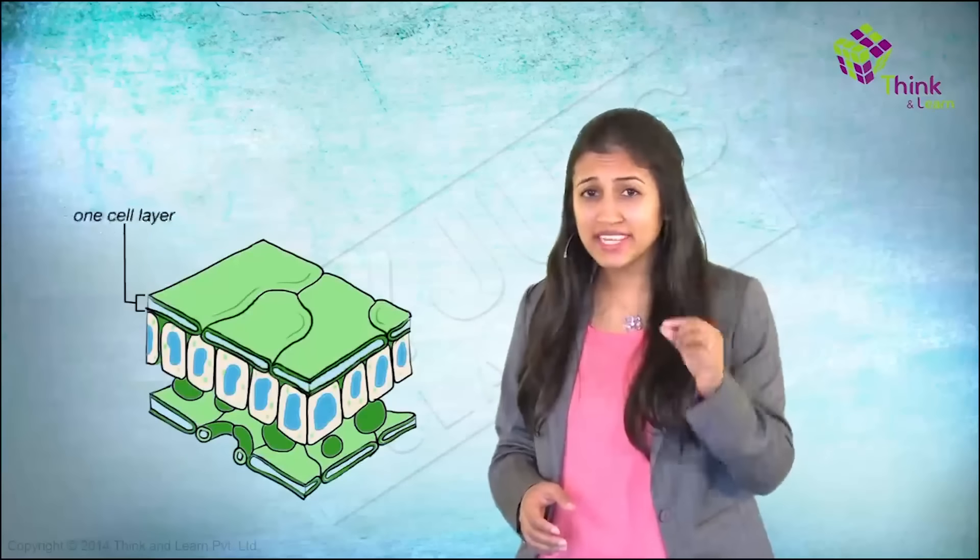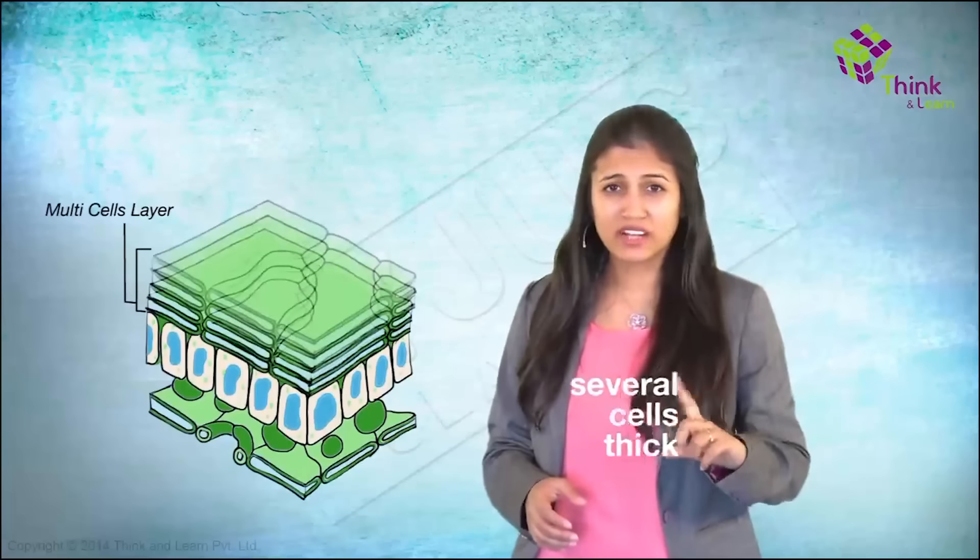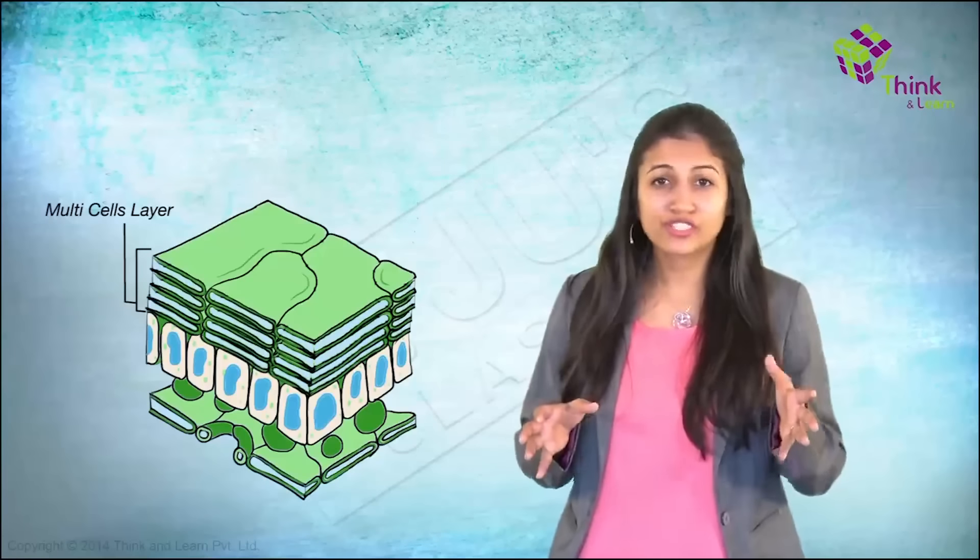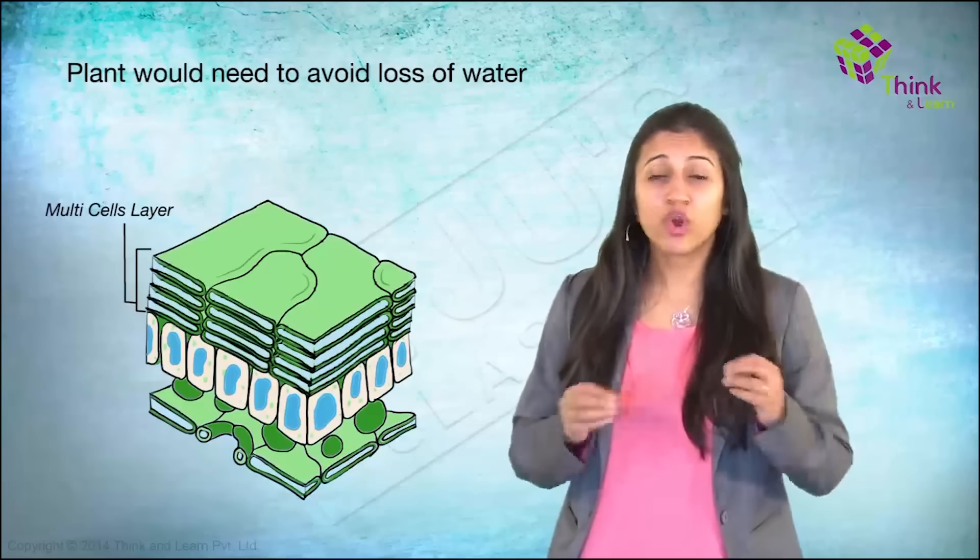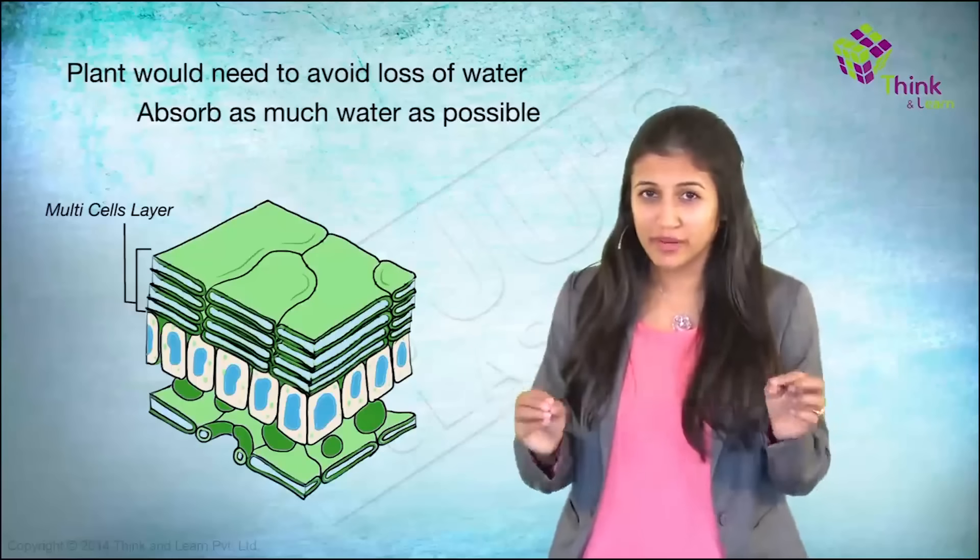Generally, the epidermis is one cell layer thick. But in some tropical plants, the layer may be several cells thick. Can you think why this can happen? The climate will be so hot, so the plant would need to avoid loss of water and absorb as much water as possible from the environment. So it would act as a sponge.